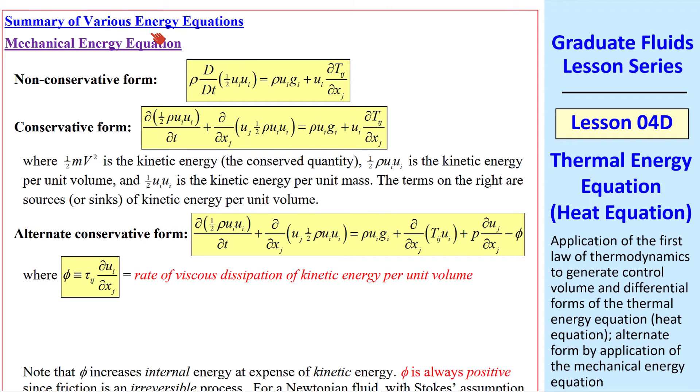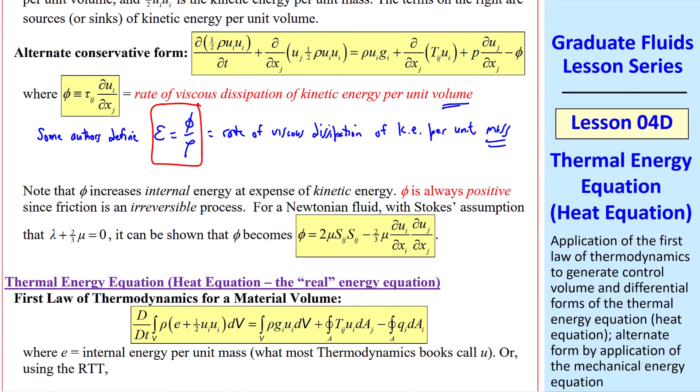I summarize here all the various energy equations. First, the two different forms of the mechanical energy equation, along with the alternate conservative form, where this part applies only to Newtonian fluids, and where we had introduced the rate of viscous dissipation of kinetic energy per unit volume, phi. I note that some authors define epsilon as phi over rho, which is then the rate of viscous dissipation of kinetic energy per unit mass instead of per unit volume. Note that phi increases internal energy at the expense of kinetic energy. It is always a positive quantity, since it is irreversible. I usually leave the algebra for a homework assignment, but if you recall Stokes' third assumption about the second coefficient of viscosity, you can show that phi becomes this form, where capital Sij was the strain rate tensor.